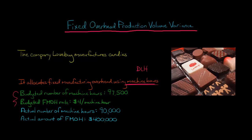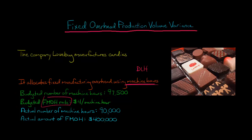We've got some budgeted information. The budgeted number of machine hours is 97,500, and the budgeted fixed manufacturing overhead rate is $4 per machine hour. In terms of the actual operating results, the actual number of machine hours is 90,000, and the actual total amount of fixed manufacturing overhead is $400,000.